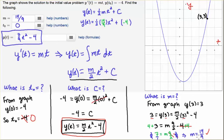Now that we have m equals 14 ninths and t naught equals zero, we plug m into the form of the equation. The two in the denominator and the 14 cancel to give seven, so we get seven ninths t squared plus minus four. Therefore the equation is y of t equals seven ninths t squared minus four. And that's how you solve this initial value problem. Good luck.